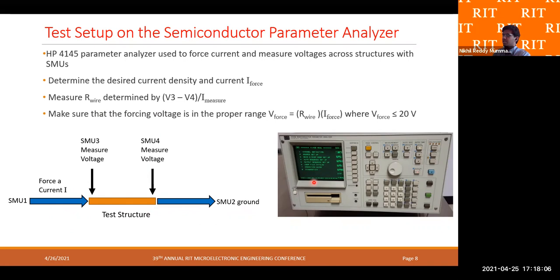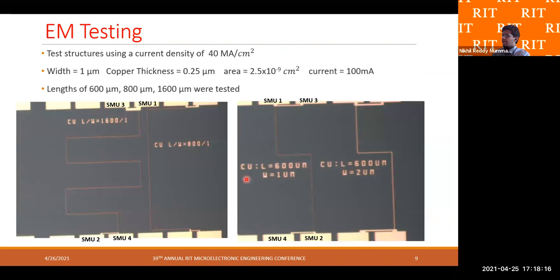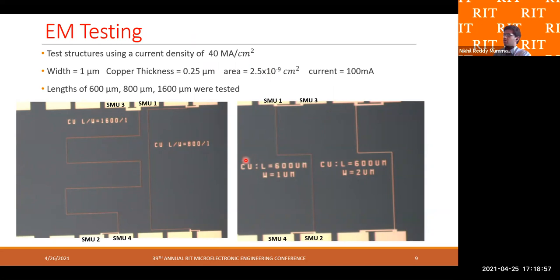The parameter analyzer has compliance limits of 20 volts, so while setting up the current, we ensured the voltage did not exceed 20 volts. Although we had a variety of wire lengths, we tested only three lengths — 600, 800, and 1600 microns — to obey the compliance limits of the equipment. The width of all three wire lengths was 1 micron, and the deposition thickness was about 0.25 microns. 100 milliamps of current was forced through all these wires, which corresponds to a current density of about 40 MA/cm². This current density was consistently applied across all wires to calculate the electromigration failure times.